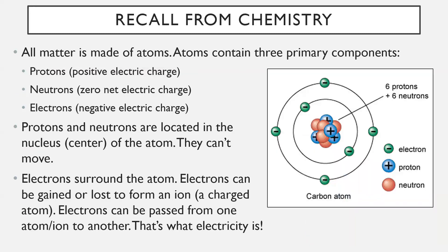Before we begin, let's recall a few things from the chemistry unit earlier this year. All matter is made up of atoms. Atoms contain three primary components: protons, neutrons, and electrons — very important as we go forward in this electricity unit. Protons and neutrons are located in the nucleus, or the center of the atom. They can't move. Those protons and neutrons are actually what determine what an element really is. Chlorine will always have its same number of protons and neutrons; carbon will always have the same number of protons for sure.